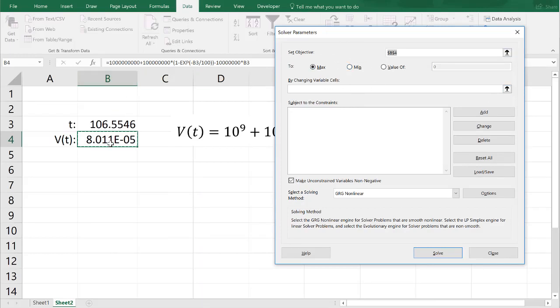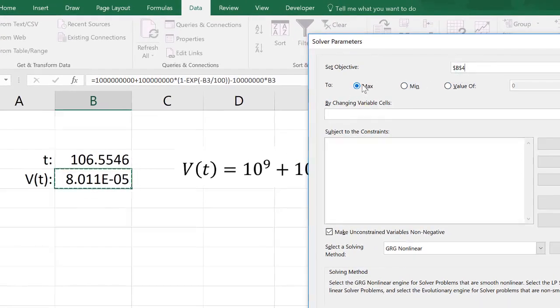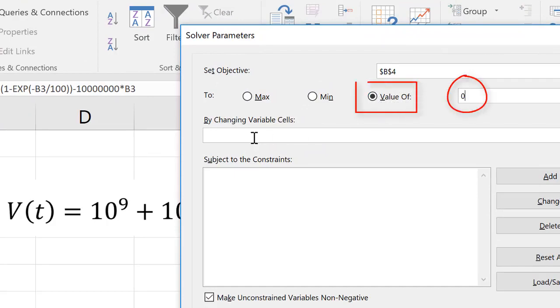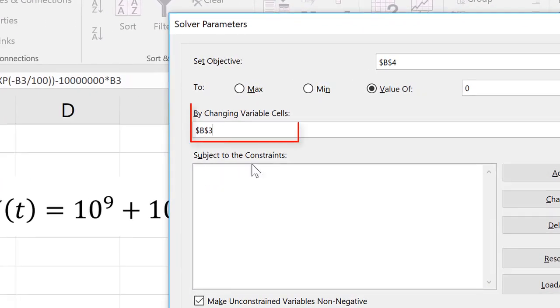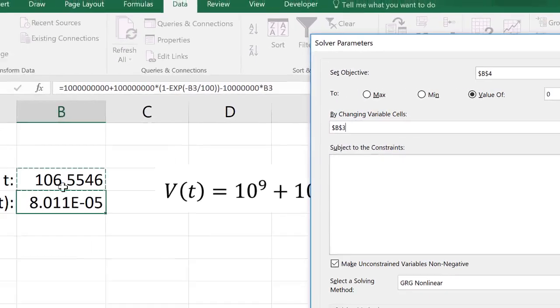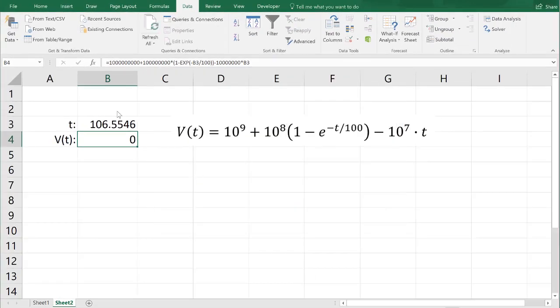But we're going to set the objective. So, I'm going to set objective, the volume, equal to not a max or a min, but to a value of 0 by changing variable cell. That's going to be B3. You notice that in the solver tool, you can change multiple cells. You can also add constraints, which can be important. I'm going to just do that. We're adjusting the volume until it's equal to 0 by changing the time. And we crank through that, and it comes up with the same solution.